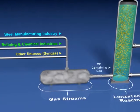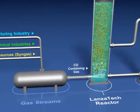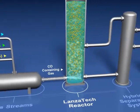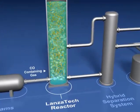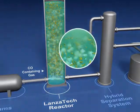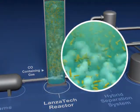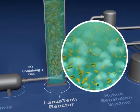The carbon monoxide-containing gas enters the process at the bottom of the bioreactor and is dispersed into the liquid medium. Here it is consumed by LanzaTech's proprietary microbes as the reactor contents move upward in the reactor vessel.